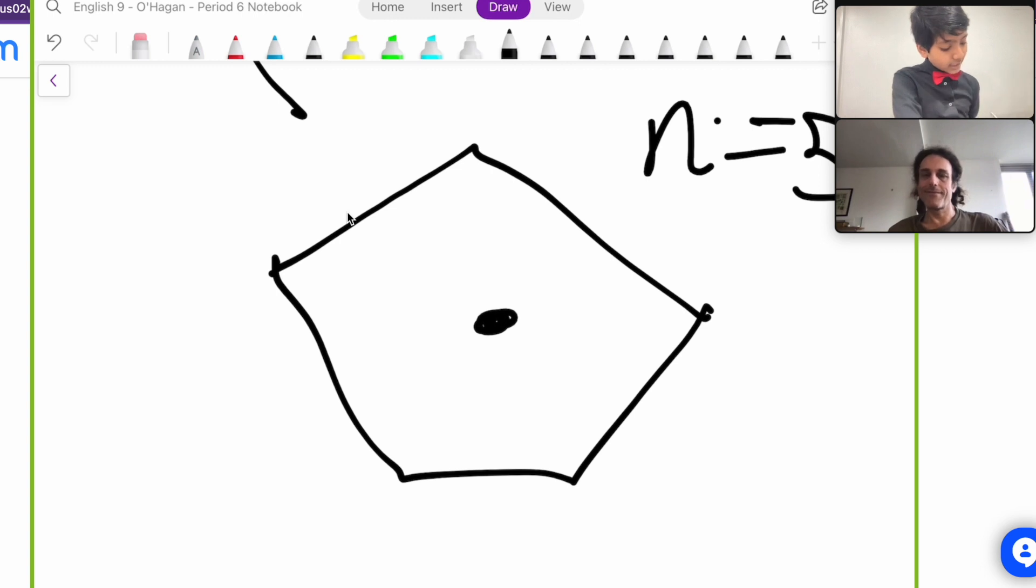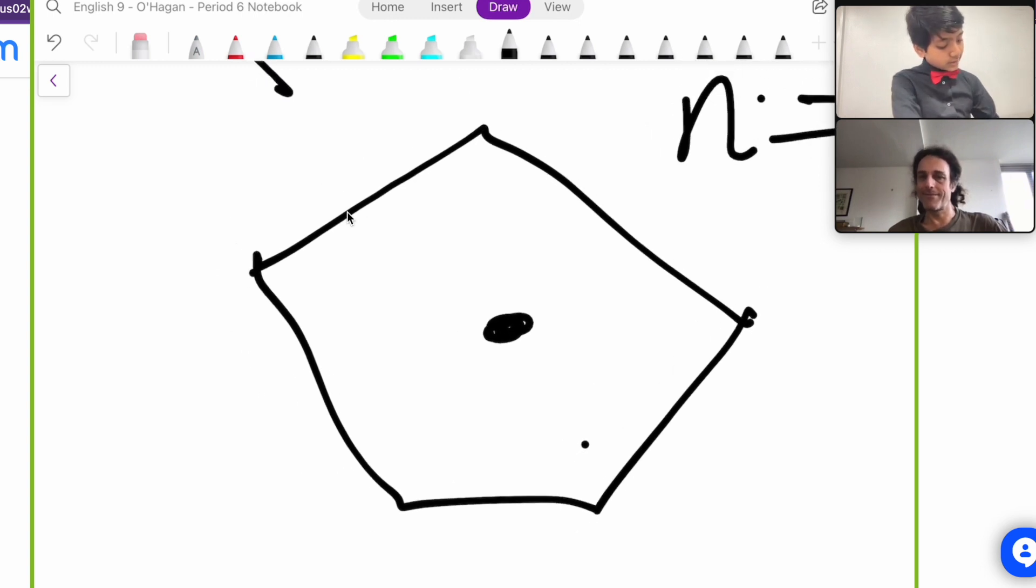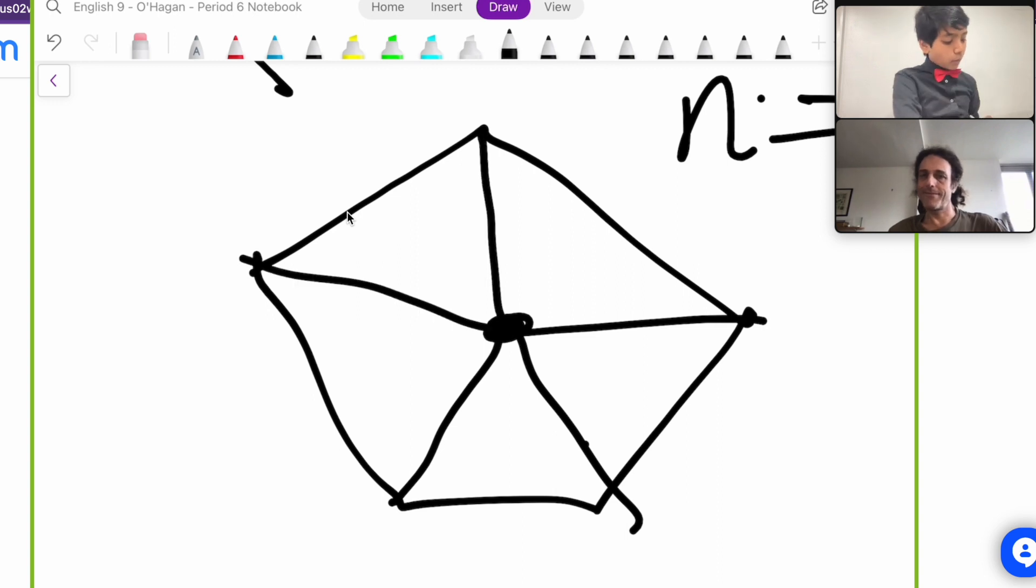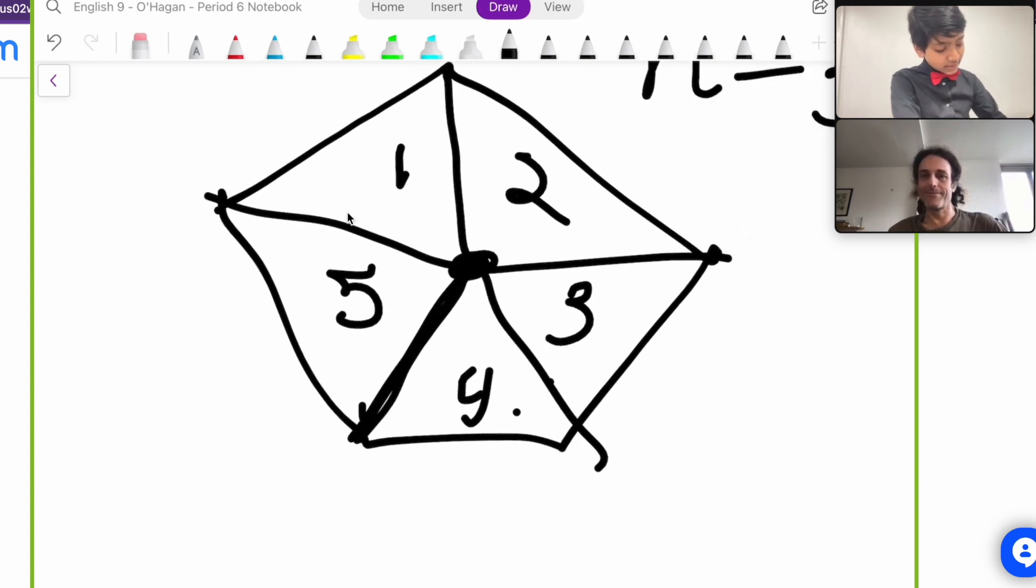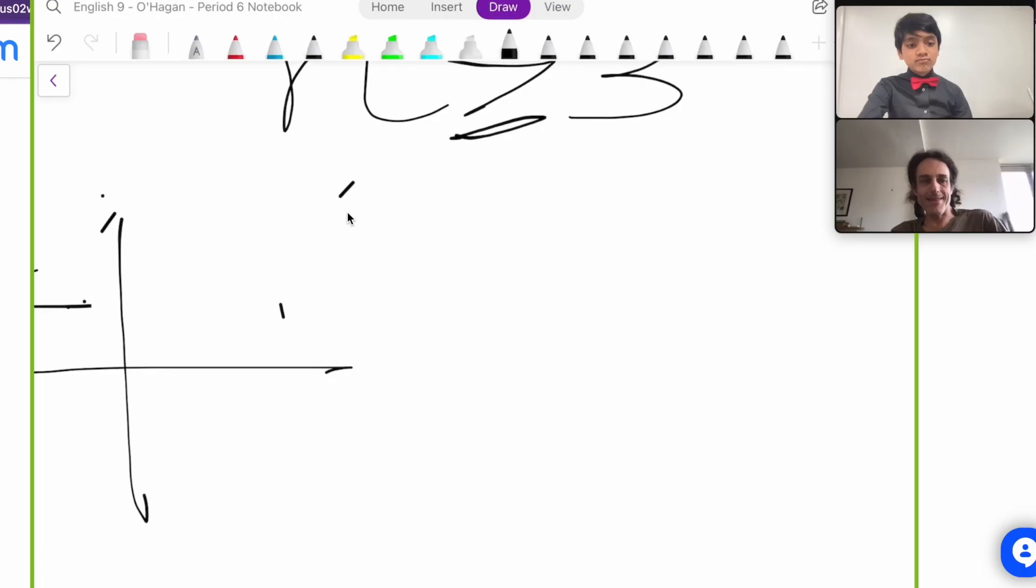If we take the center here, or the circumcenter in this case, then our circumradii simply split our polygon of n sides into n—well, not equilateral, but isosceles triangles: 1, 2, 3, 4, 5. And we know they are isosceles because this distance has to be the same as this distance.